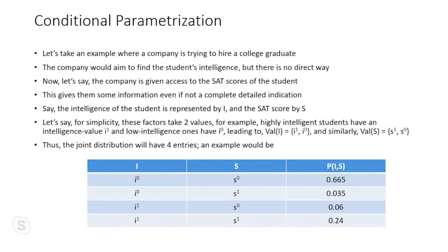A company is trying to hire a college graduate named George. They want to assess his intelligence but haven't interacted with him. So they use his SAT exam score as evidence. Intelligence is represented by I (I₀ = low, I₁ = high), and SAT score by S (S₀ = bad, S₁ = good). With two binary variables there are four entries in the joint table.